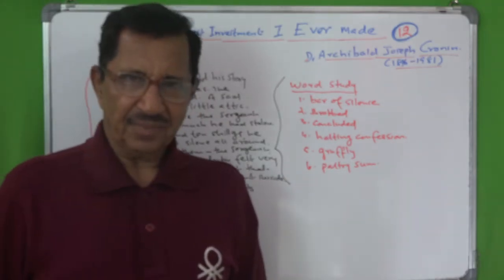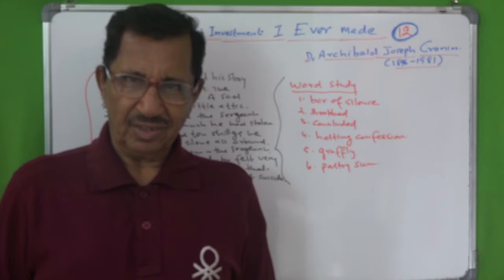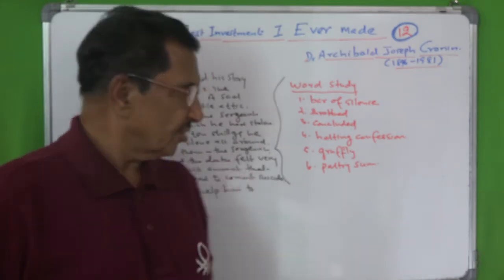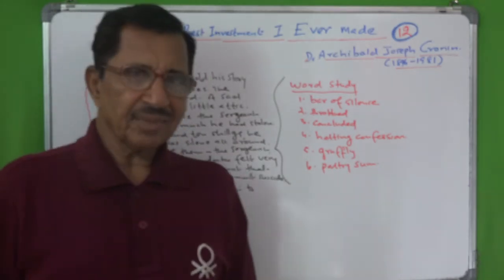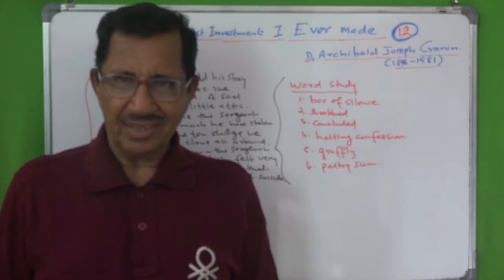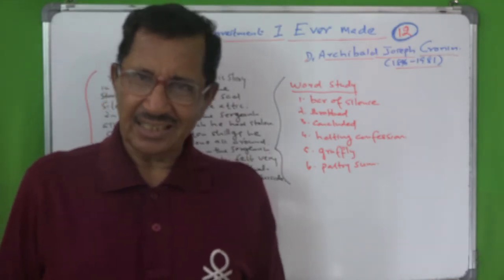Roughly, the rough voice. Then paltry sum, a small sum, a small amount. Just seven pounds and ten shillings.